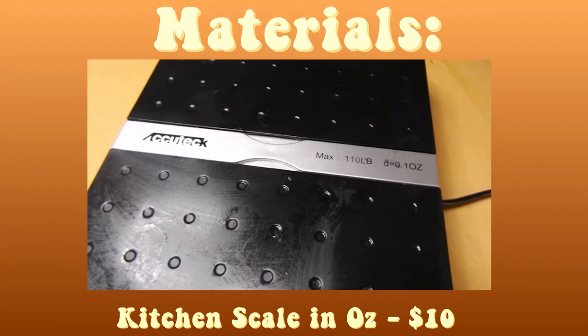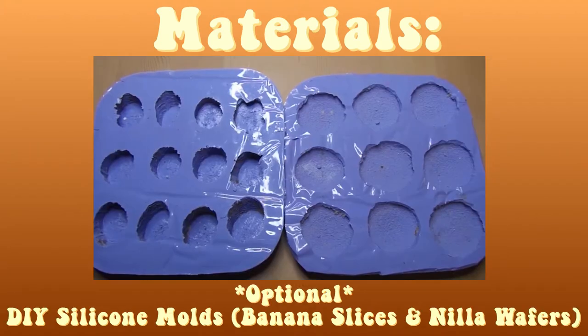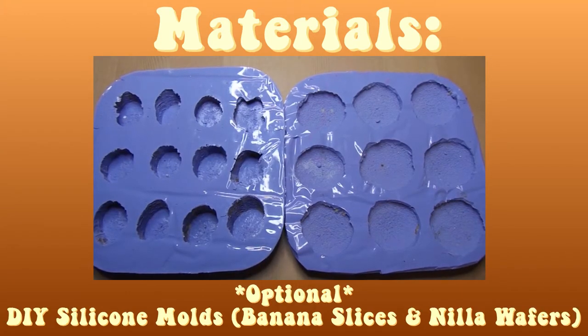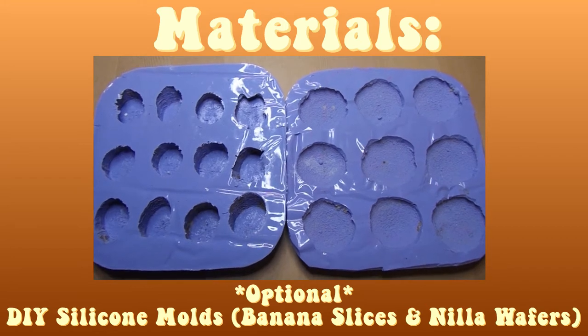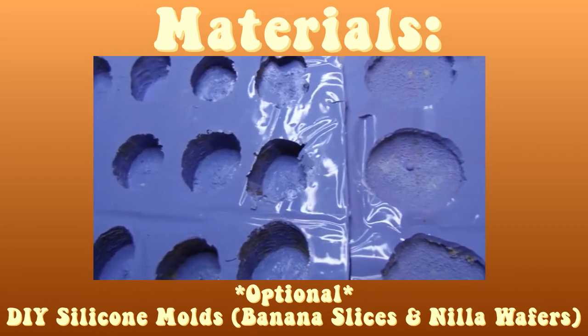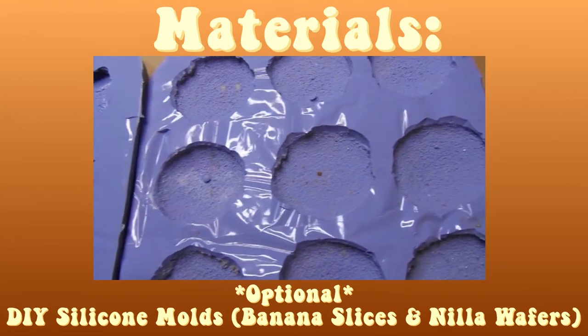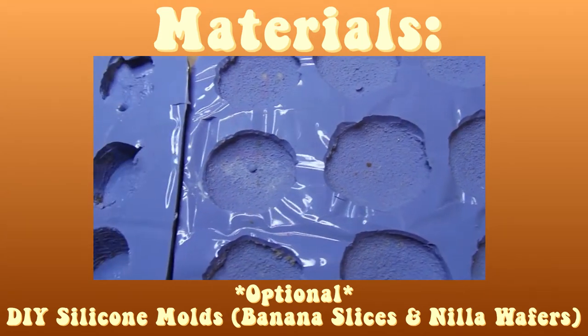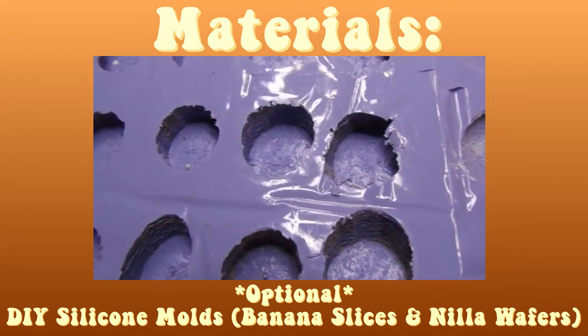A kitchen scale that can measure in ounces. And this is totally optional but a while back I made these silicone molds that are shaped like banana slices and Nilla wafers because I just think they make it look really cute. Let me know if you're interested in a video about this. I'll be happy to show how I made them.